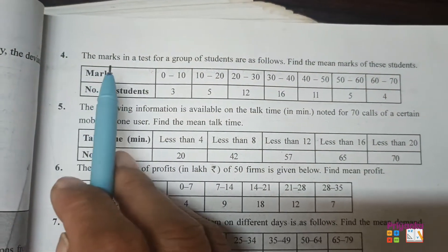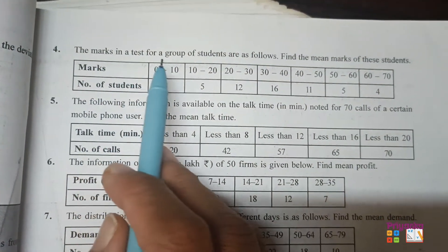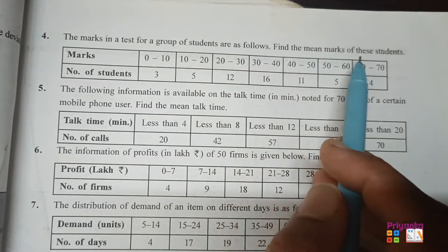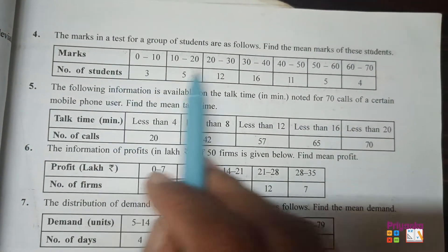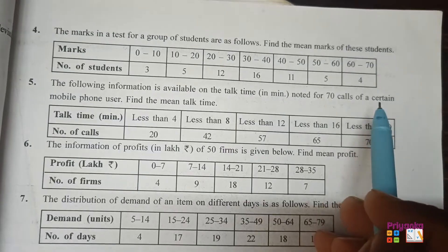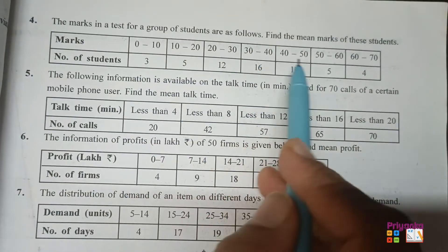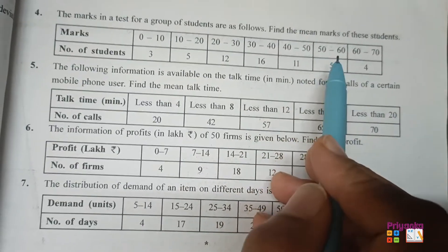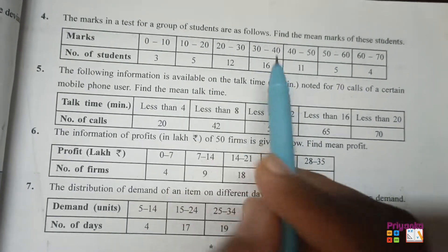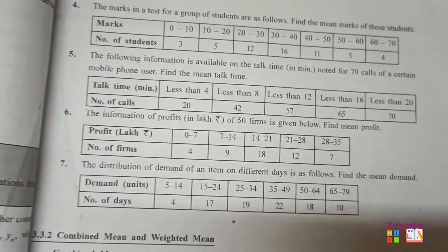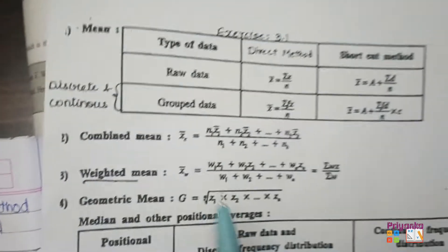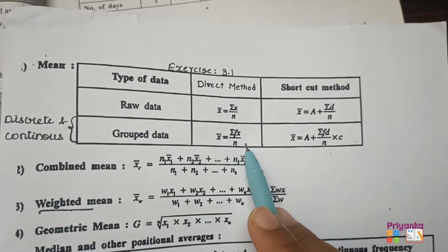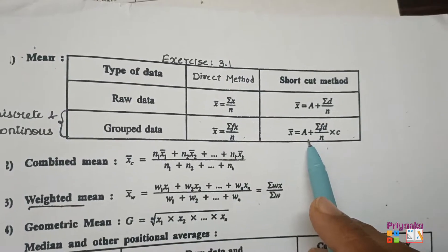Question number 4. The marks in a test for a group of students are as follows. Find the mean marks of these students. Here the marks and the number of students are given. The marks are given in continuous group data. For continuous data, we have the direct method and the shortcut method.